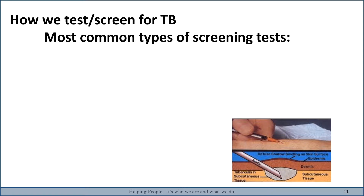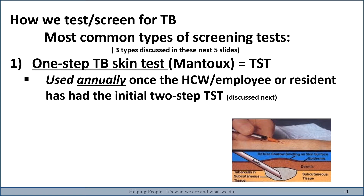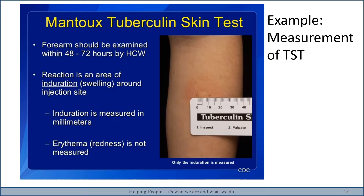How do we test for TB? The most common screening test is the one-step TB skin test, Mantoux, abbreviated TST. It is used annually once the healthcare worker or resident has completed the initial two-step tests. Tuberculin purified protein derivative, or PPD, is injected on day one and checked for a positive or negative result read 48 to 72 hours later. The forearm is examined within 48 to 72 hours by a trained healthcare worker. The reaction is an area of induration around the injection site, measured in millimeters. The redness is not measured — only the actual swelling or induration is read.